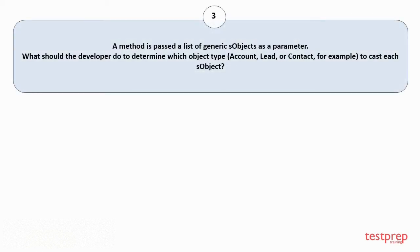Question number 3: A method is passed a list of generic sObjects as a parameter. What should the developer do to determine which object type (Account, Lead, or Contact, for example) to cast each sObject? Your options are.